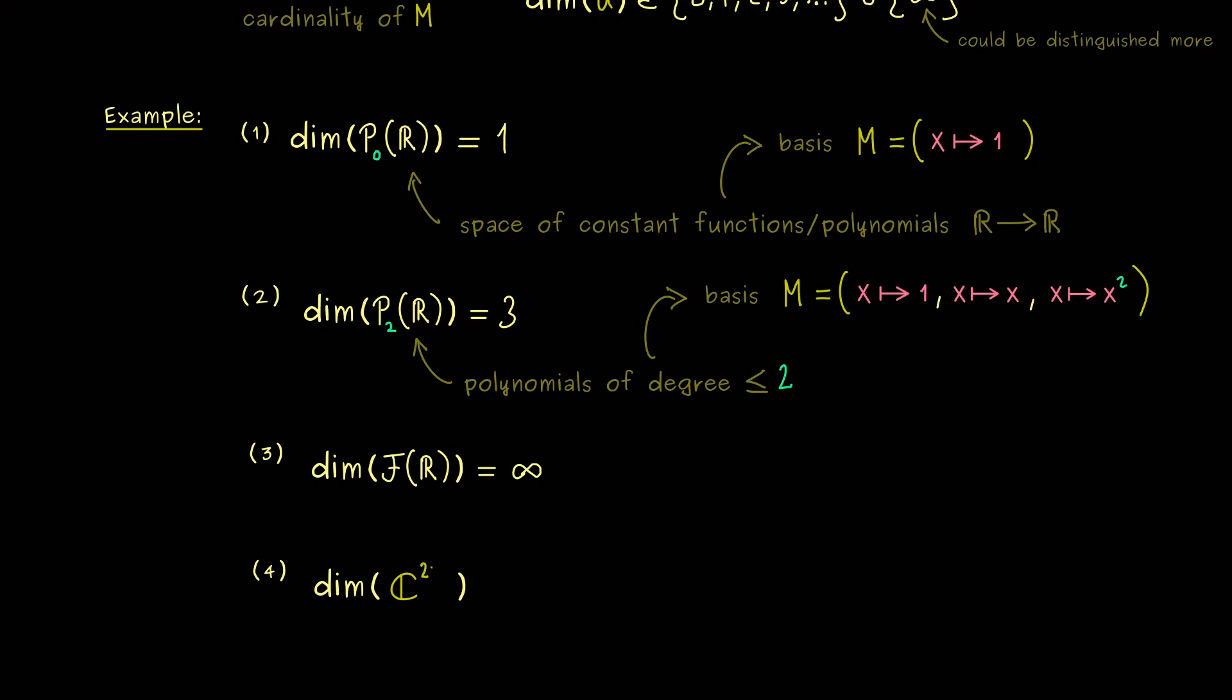Ok, but now the last example here might be easier. I want the dimension of this concrete vector space here. It's the space of all complex valued matrices with 2 rows and 3 columns. And now the exercise for you would be to write down a linearly independent set that generates this space. This means you have a basis and the number of elements should be given by 6.